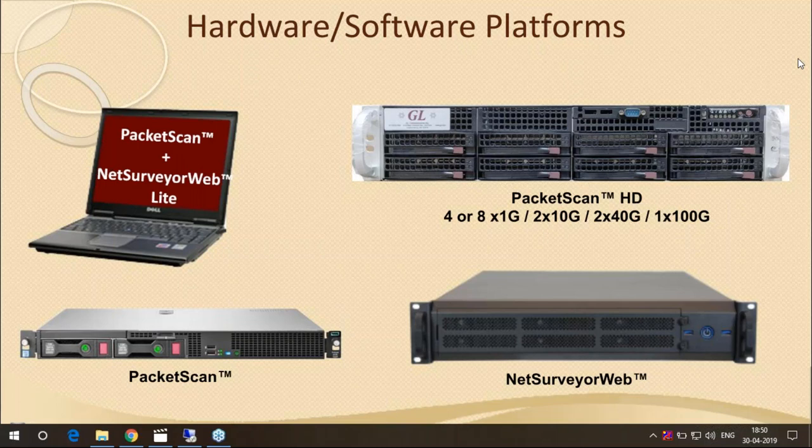There is a higher-density version of PacketScan that can monitor four or eight by one-gigabit Ethernet interfaces simultaneously, or two by 10 gig, or two by 40 gig, or several cards with one by 100 gig. It is available in almost all bandwidth configurations for IP interfaces.